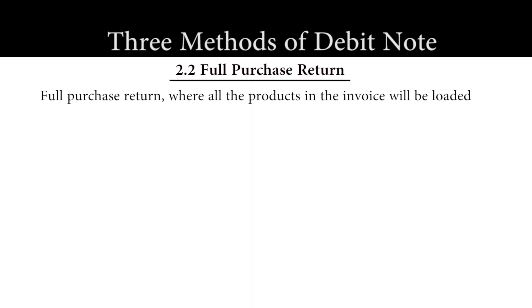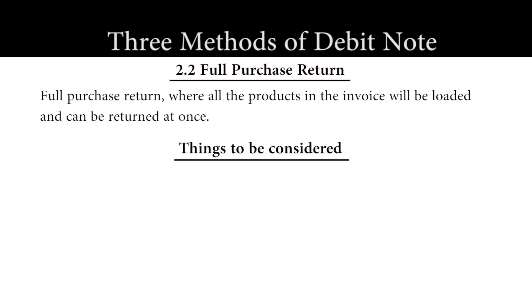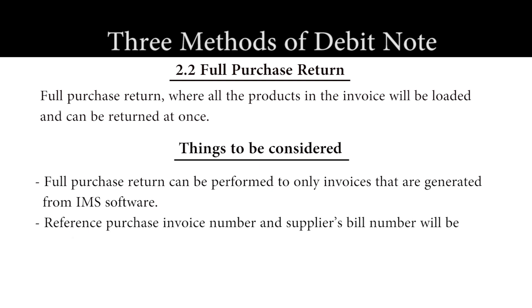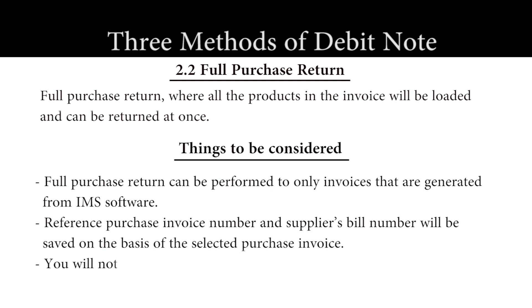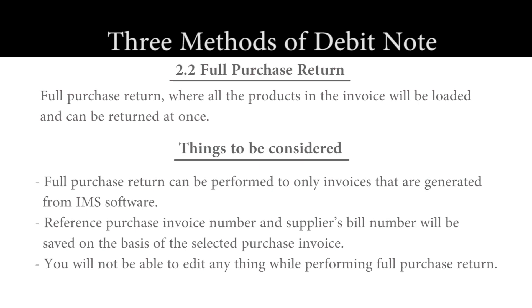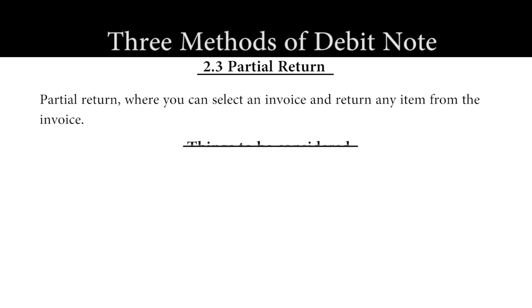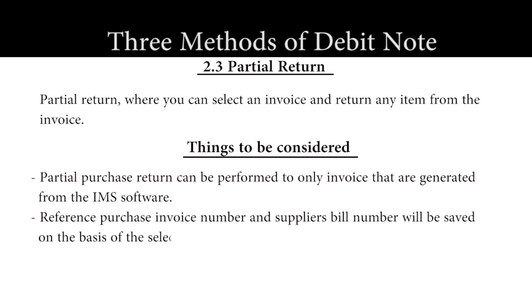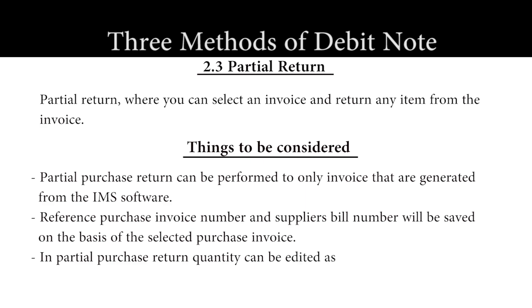The second type is to do a Full Return, where all the products in the invoice will be loaded and can be returned at once. Full Purchase Return can only be performed on invoices generated from IMS software. The Reference Purchase Invoice Number and Supplier's Bill Number will be saved based on the selected Purchase Invoice, and you will not be able to edit anything while performing a Full Purchase Return. The last type is a Partial Return, where you can select an invoice and return any item from it. Partial Purchase Return can only be performed on invoices generated from IMS software, and the quantity can be edited as per your requirement.